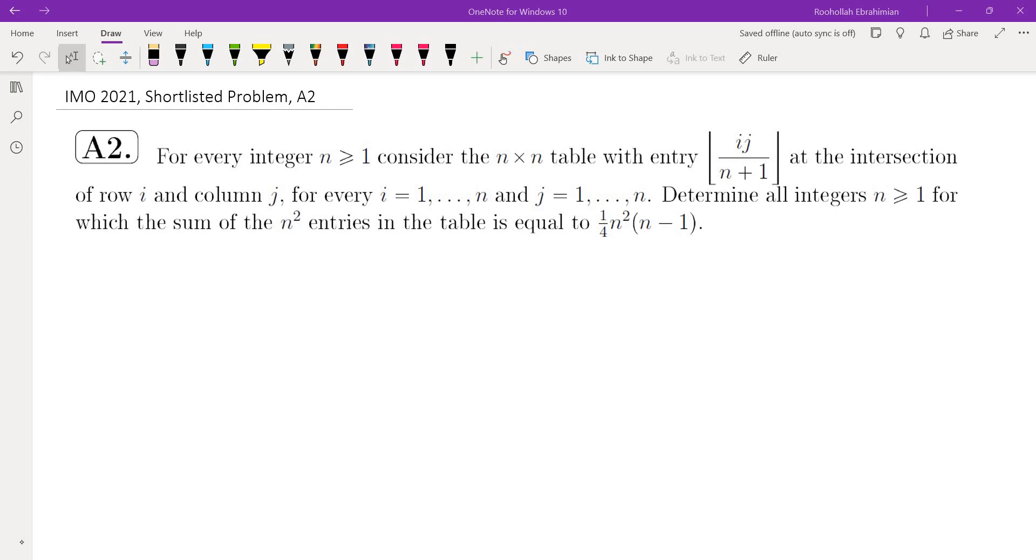Here's the problem. For every integer n greater than or equal to 1, consider the n by n table with entry floor of ij over n plus 1 at the intersection of row i and column j, for every i from 1 to n, j from 1 to n. Determine all integers n greater than or equal to 1, for which the sum of the n squared entries of the table is equal to 1 fourth n squared times n minus 1.